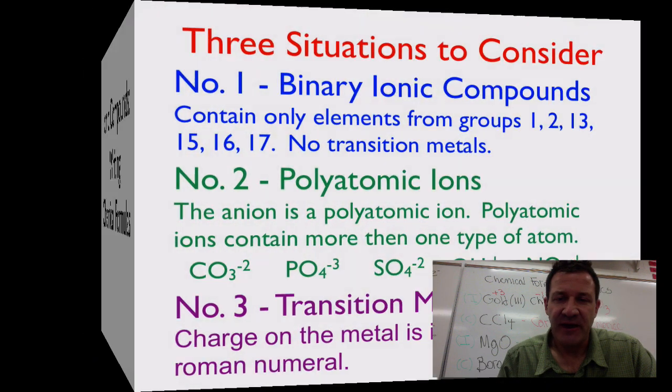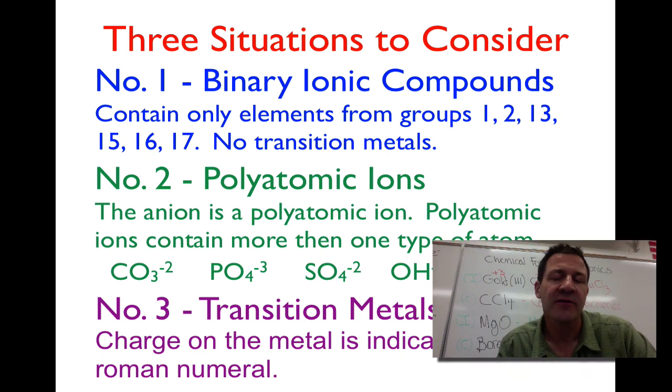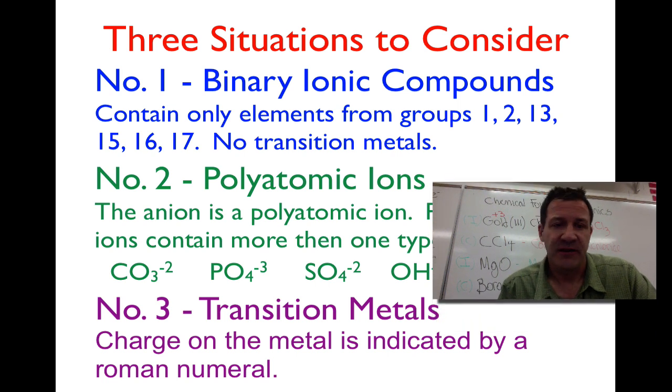Let's go through and look at the three different cases that we have to be aware of. We have binary ionic compounds, which means that all of our elements come from group 1, 2, and 13 for our positively charged cations, or group 15, 16, 17 for our negatively charged anions, which means that we aren't going to have any transition metals in that case.